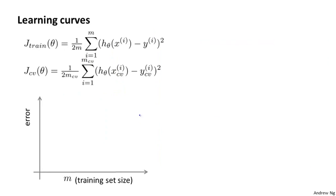Here's what a learning curve is. To plot a learning curve, what I usually do is plot J_train, which is the average squared error on my training set, or J_CV, which is the average squared error on my cross-validation set. And I'm going to plot that as a function of m, as a function of the number of training examples I have.